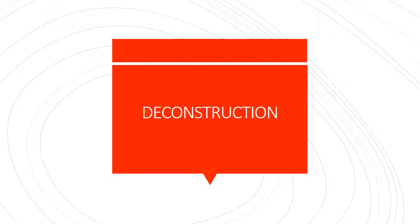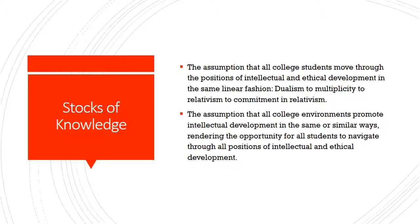Now we're going to discuss deconstruction and what it means to take apart Perry's theory of intellectual and ethical development. As we start the process of deconstruction, it's important to acknowledge one of the major components of deconstruction which falls under critical social theory. One of those components is stocks of knowledge — the generalized assumptions that people tend to have in regards to what is qualified as normal theories. One assumption made through Perry's theory is that all college students move through these positions of intellectual and ethical development in a linear fashion, from dualism to multiplicity to relativism to commitment in the same similar fashion, with no other prioritizing way to progress.